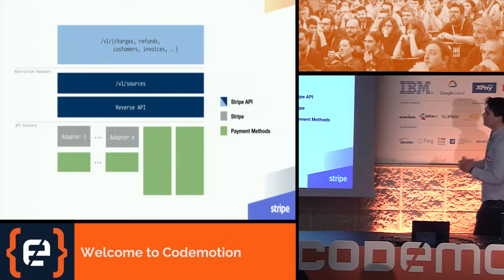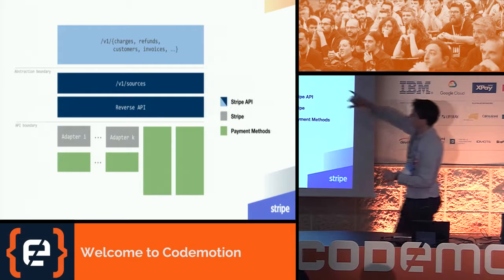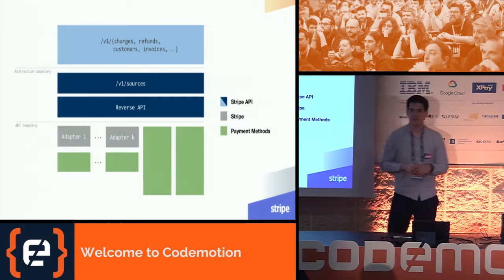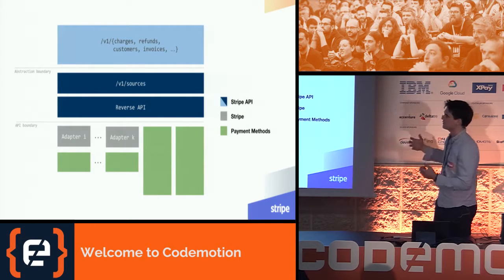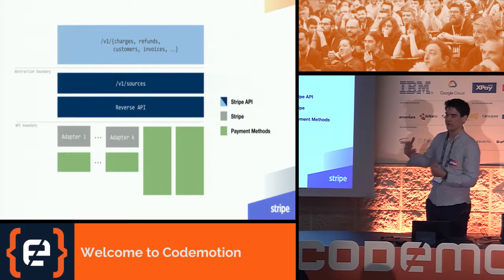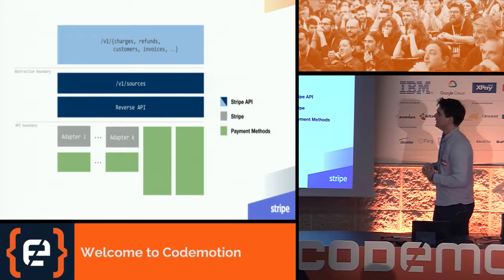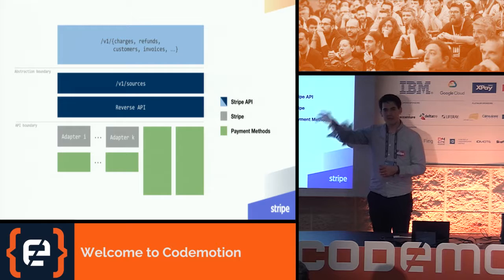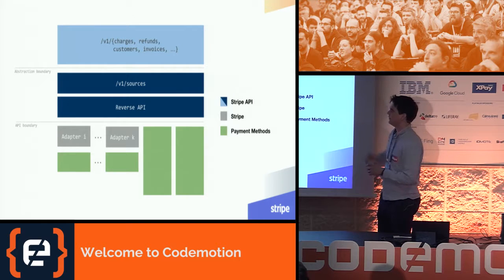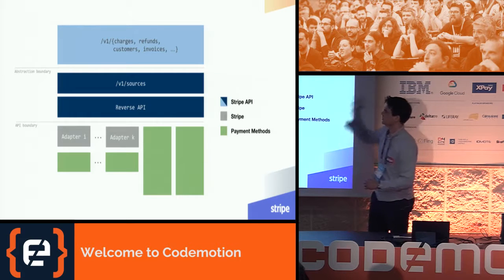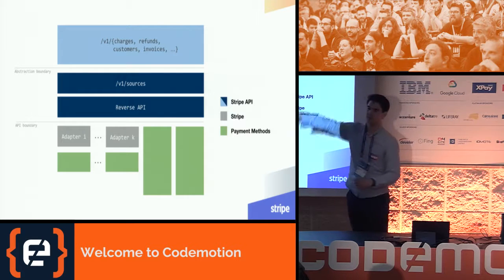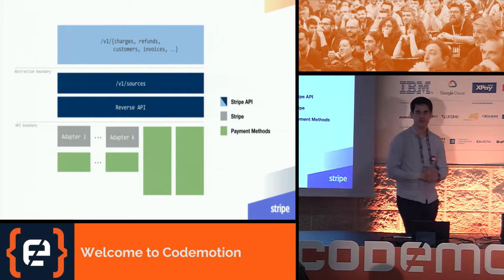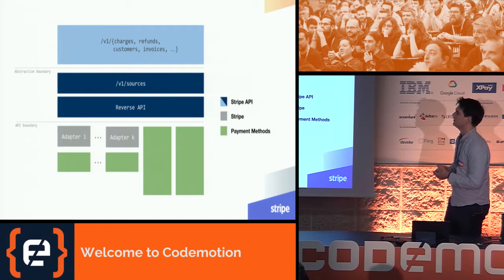The v1 sources API has served as a great abstraction boundary. All of the complexity about authorizing a payment happens through the v1 sources endpoints, and once you get a chargeable source, you can use it with all the other APIs we provide — for subscriptions, Connect, etc. — in a very standardized way.